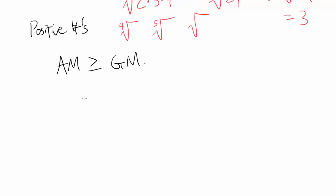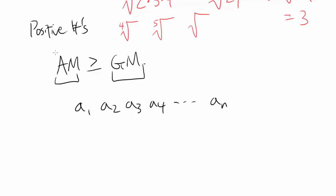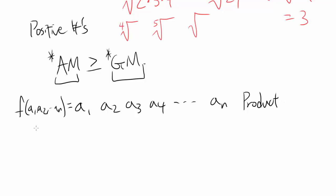How are we going to prove this? Let's say you're given numbers A₁, A₂, A₃, A₄, and let's say you have n of them, up to Aₙ. And you find Arithmetic Mean and Geometric Mean, and we want to show Arithmetic Mean is larger than or equal to Geometric Mean. Let's define a function f(A₁, A₂, ... , Aₙ) to be the product of all the n numbers.